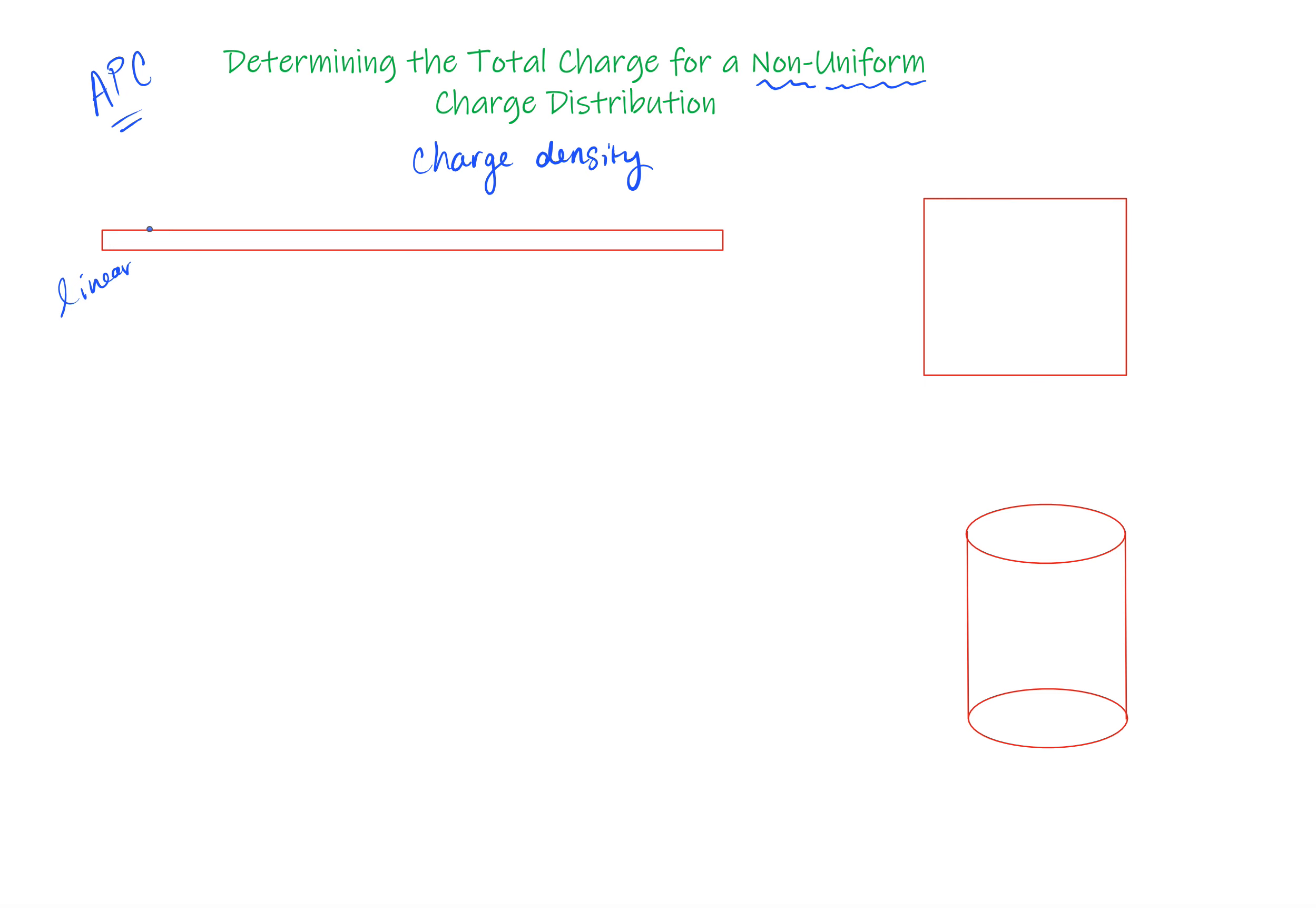So this we're going to describe linear charge density. Here is just a square, it could be a circle, it could be any shape. And this is our surface charge density, our area charge density. And then of course here I just used a cylinder, but it could be any three-dimensional shape. And this we would use to look at volume charge density.